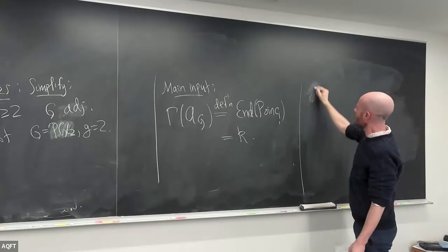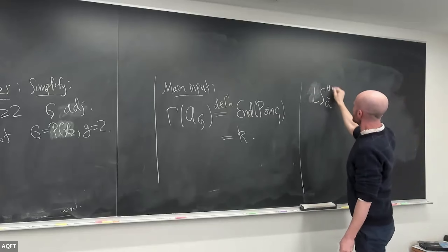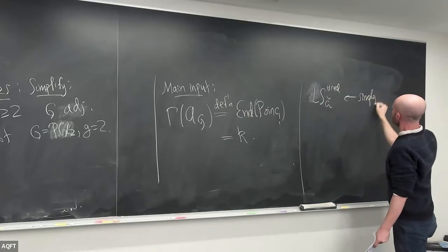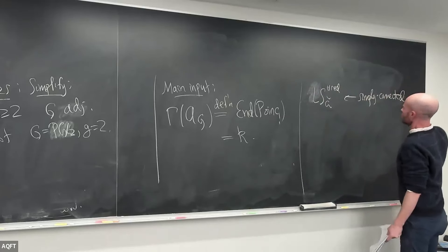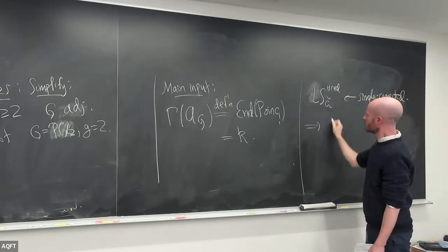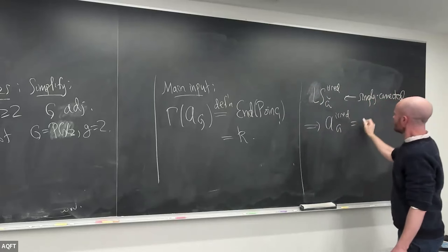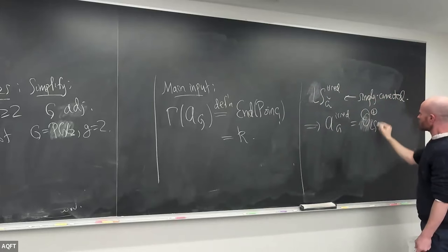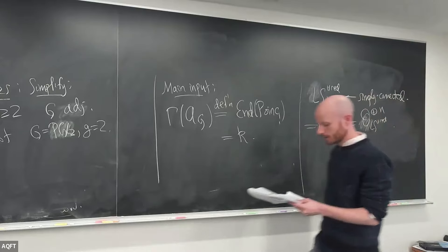This mirrors, at the Langlands dual level, the statement that there are no non-constant functions on LocSys-G-check. That's something extremely de Rham that we're using — the key thing where nothing we do could possibly have an analog in the Betti world. So what we want to do is build off of this: AG couldn't have been O ⊕ O, for instance. We know that already from Eisenstein series, but this is telling us something about this object being small.